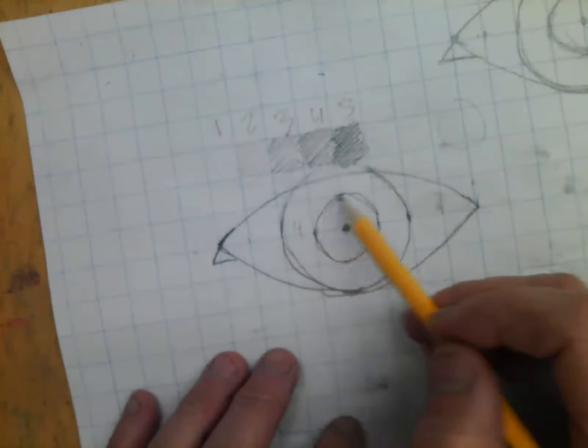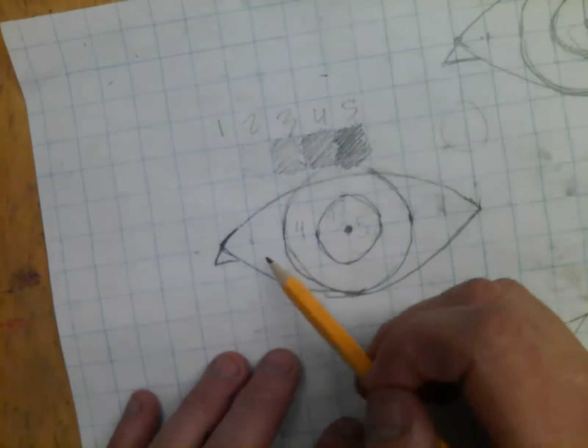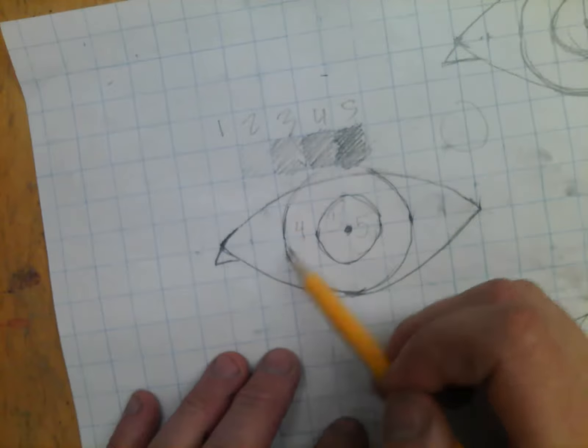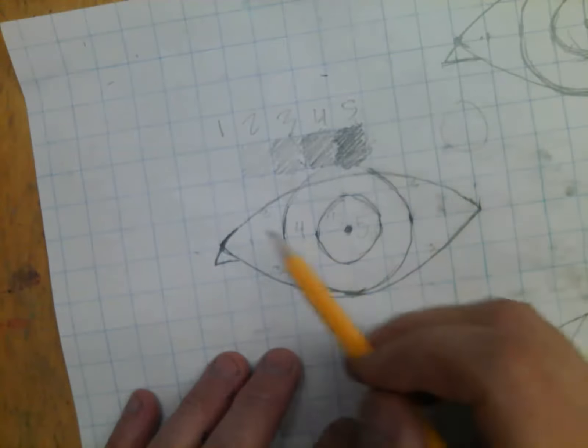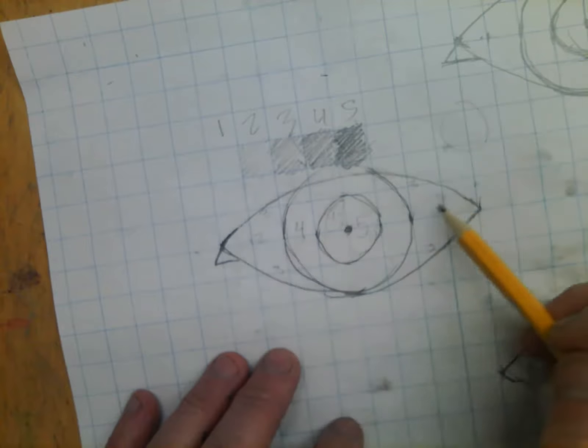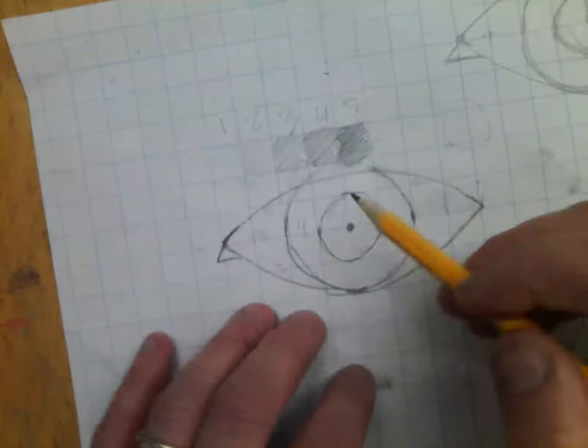Then we're going to have a shadow going right across here and under here. So even though it's the white of the eye, we're going to be putting three areas all along the outside. And then right here, even though it's the white of the eye, it's going to be a two value. So it'll be light. It'll still not be plain old white.